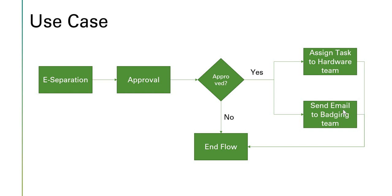The email would be fired automatically, but for the catalog task the hardware team will have to close it, and only then would we end the flow. The second path is: if the approval is cancelled, we would end the flow then and there.